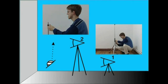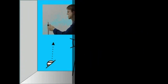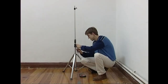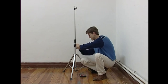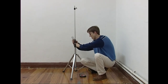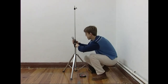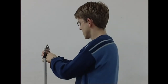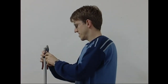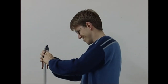Orain goan, plano itxiagoan filmatuko dugu. Muntatzerakoan, lehenengo planoa aktorearen burua kuadroaren goiko aldetik desagertzen hasten denean mostuko dugu. Bigarren planoan, mugimenduaren bukaera erakutsiko dugu.